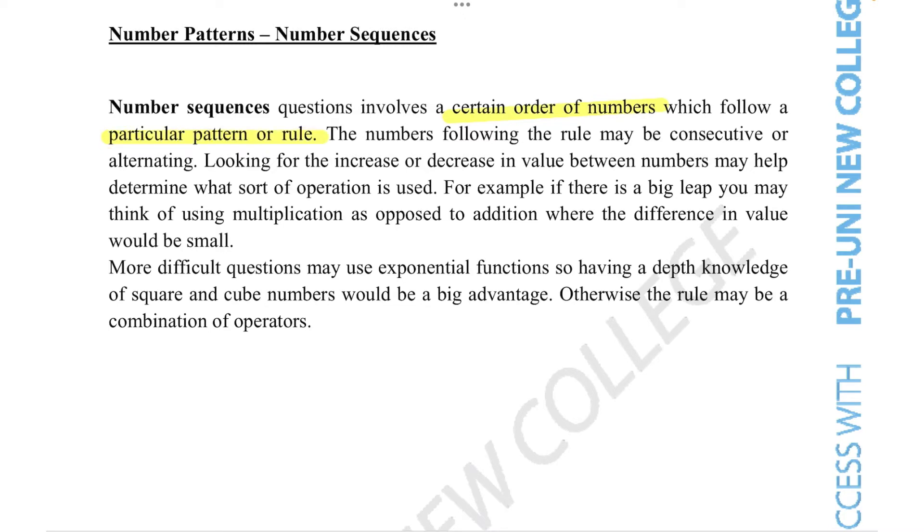The numbers following the rule may be consecutive or alternating. Looking for the increase or decrease in value between numbers helps determine what sort of operation is used. For example, if there's a big leap, you may think of using multiplication rather than addition where the difference in value would be small.